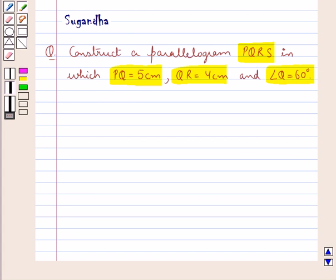So we have to construct the parallelogram PQRS in which we are given the two sides and the included angle. Let us proceed with the solution. First of all let us make a rough figure for the parallelogram PQRS.